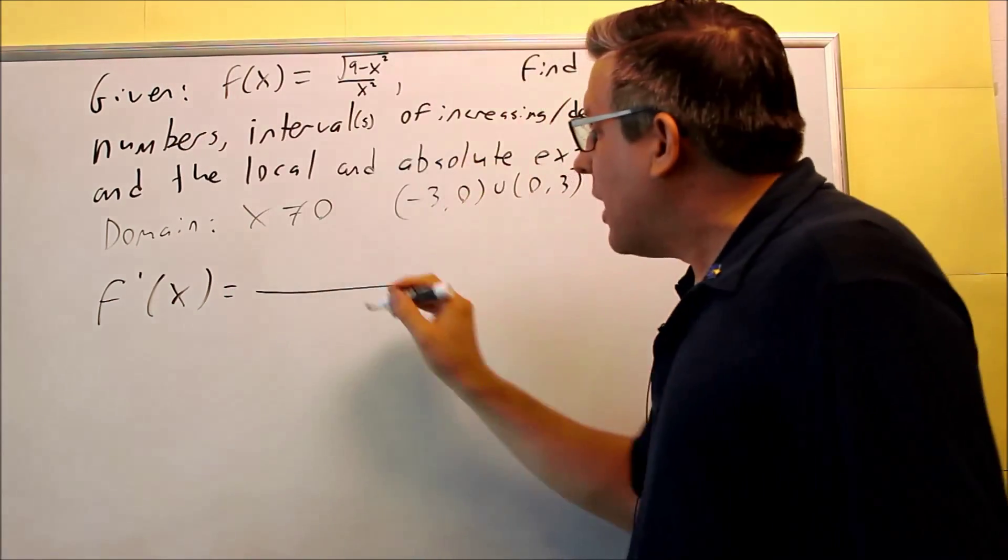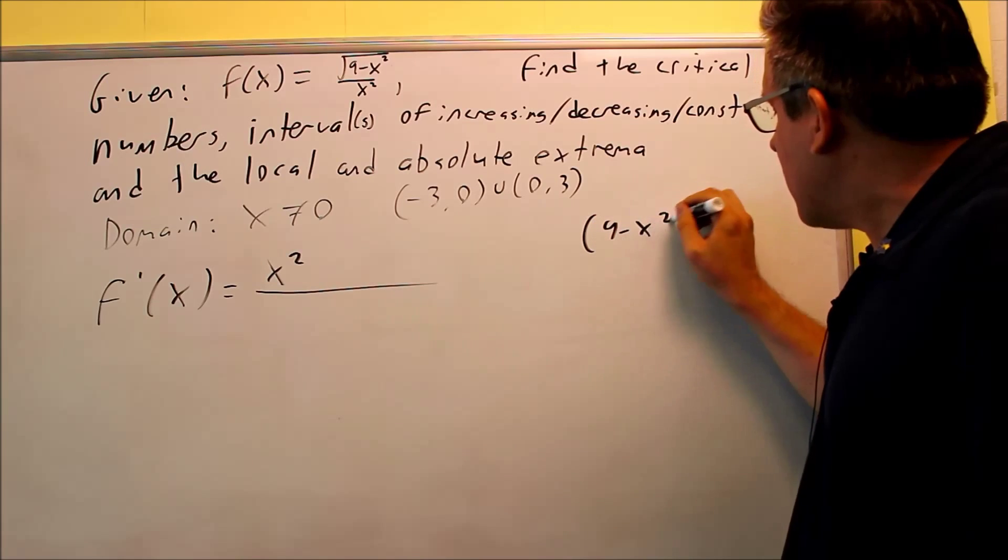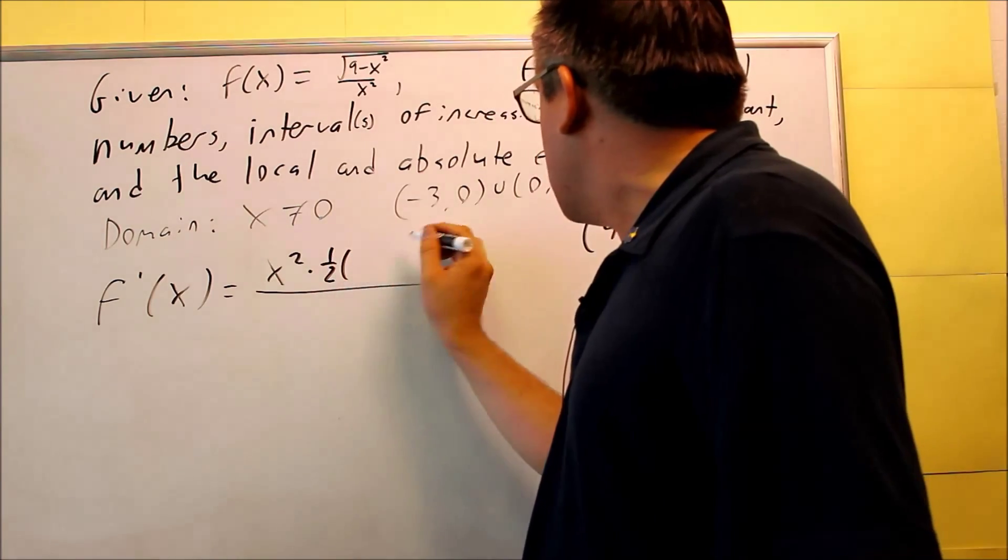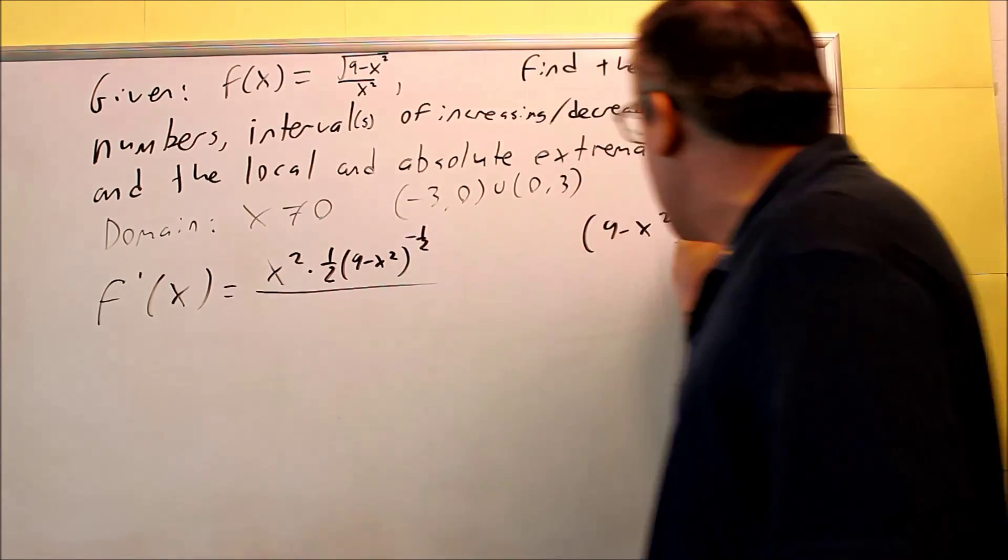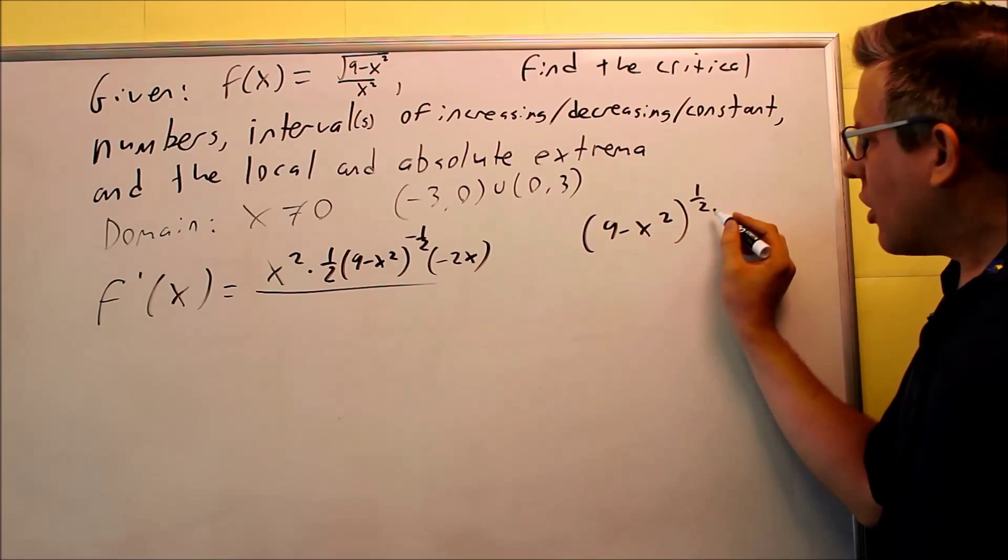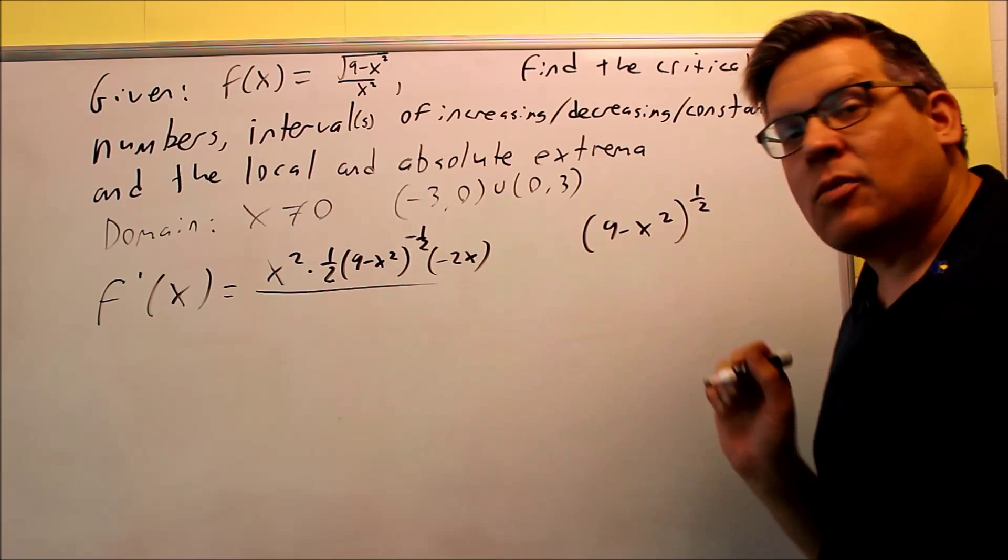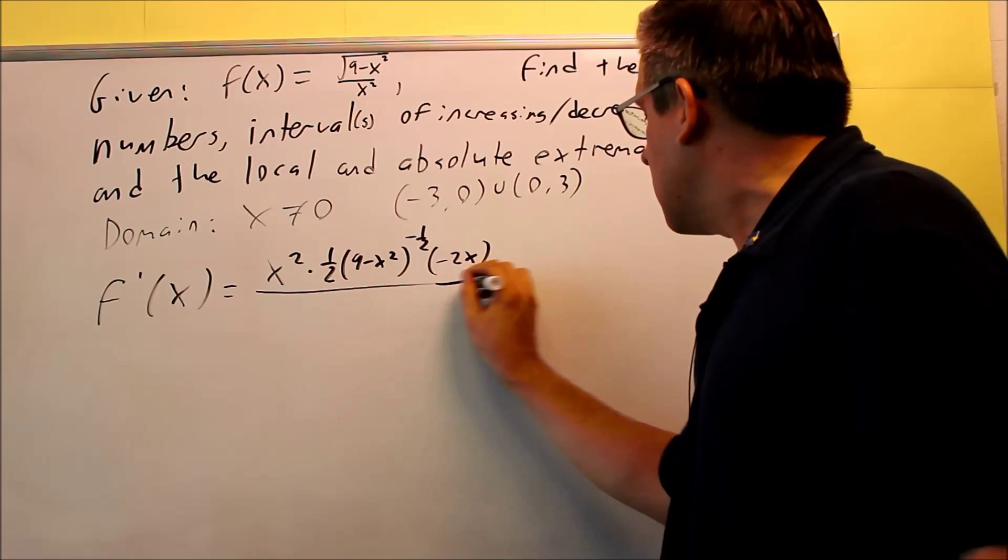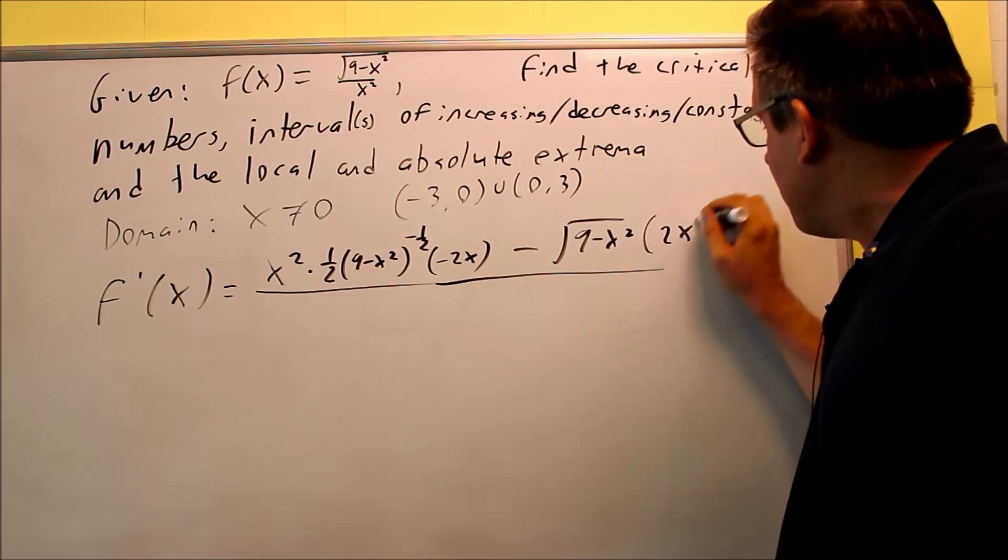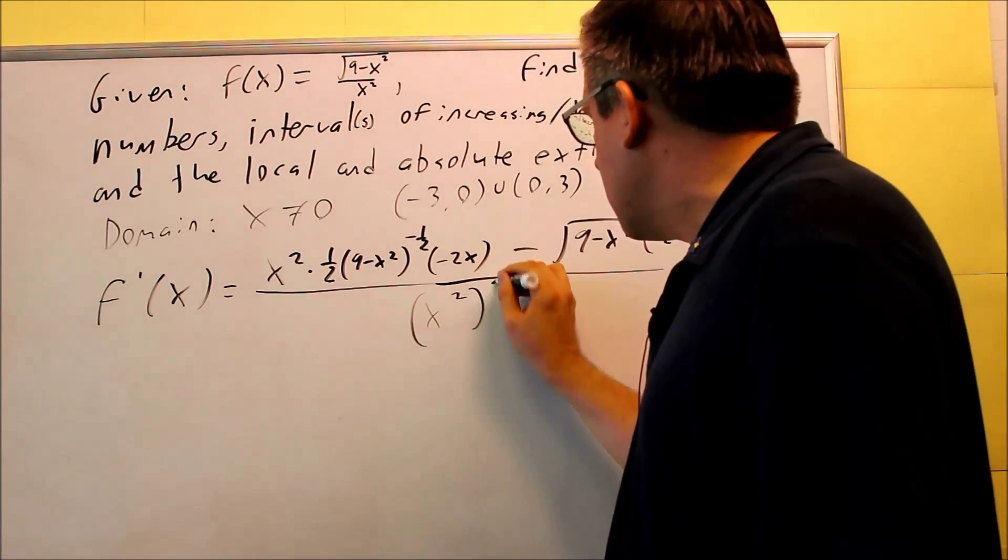The quotient rule says that we take the bottom thing and then times the derivative of the top. This top part here, I can do 9 minus x squared to the 1 half power. So when I do the derivative of this, I've got to do a chain rule. So 1 half comes down, 9 minus x squared. Subtract 1 from the exponent, I'll get negative 1 half. And then, don't forget to multiply by the derivative of the inside. So this is our function, this is the top piece. The whole derivative of this is this whole thing here. 1 half times this and then times negative 2x. Then we've got the rest of the quotient rule minus the top thing. So the top thing, I'm just going to go ahead and leave it in the square root form. Times the derivative of the bottom. The derivative of x squared is 2x. It's over the bottom squared. So I have x squared squared.